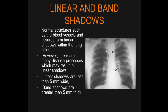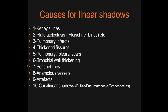Causes of linear lung shadows or markings include: Kerley lines, plate-like atelectasis, pulmonary infarcts, thickened fissures, pulmonary and pleural scars, bronchial wall thickening, central lines, anomalous vessels, artifacts, and curvilinear shadows like pneumatoceles and bronchoceles.